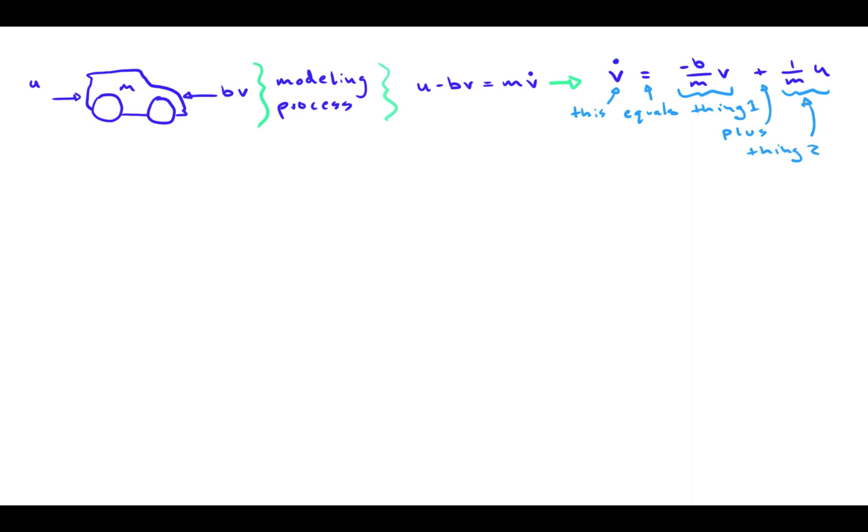With this form in mind, we can start building our block diagram by beginning with the summing junction, which says that the output equals the sum of two inputs. For the time being, we can label what the signals are supposed to represent, then fill them in as we go.